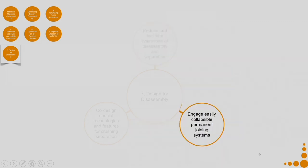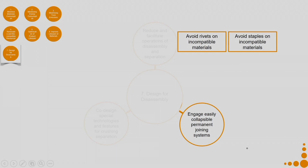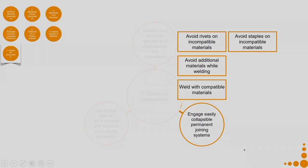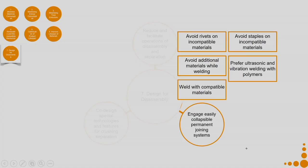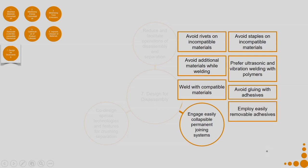For engage easily collapsible permanent joining systems: avoid rivets on incompatible materials, avoid staples on incompatible materials, avoid additional materials while welding, weld with compatible materials only, prefer ultrasonic and vibration welding with polymers. If you do not know what ultrasonic welding, vibration welding, or rivets are, you can look them up on the internet — this course cannot cover all those different aspects. Avoid gluing with adhesives, and employ easily removable adhesives.